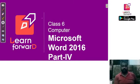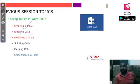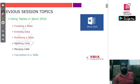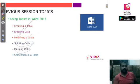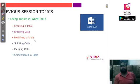Good evening students. Today we have our fourth class on Microsoft Word. Before starting, let's see what we covered in our last class. We have seen how to create a table in Microsoft Word, how to enter data in that table, how to modify the table by inserting or deleting rows, how to split a row or column into multiple cells, and how to merge cells.